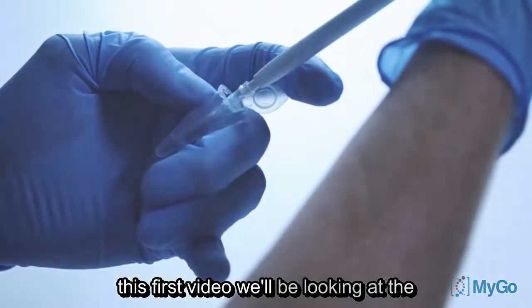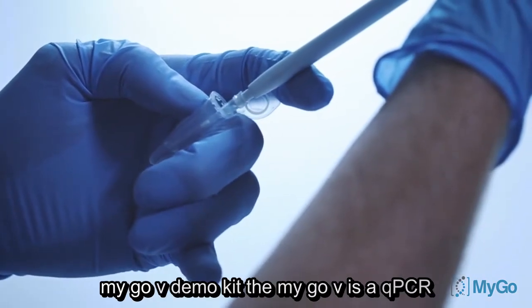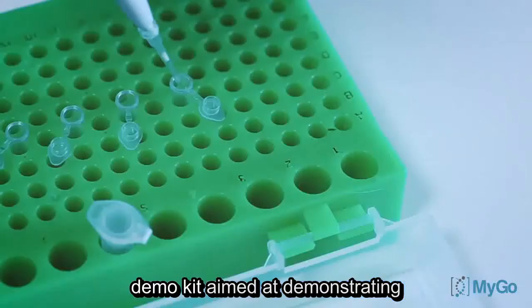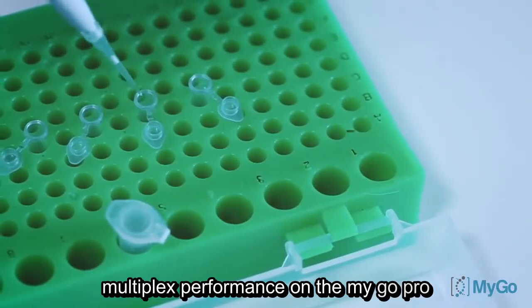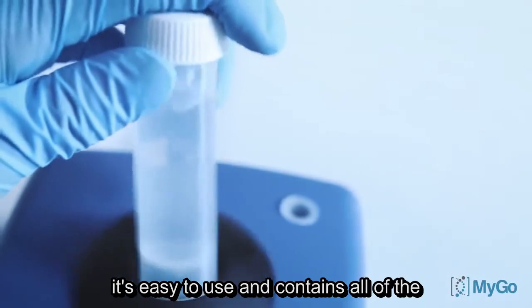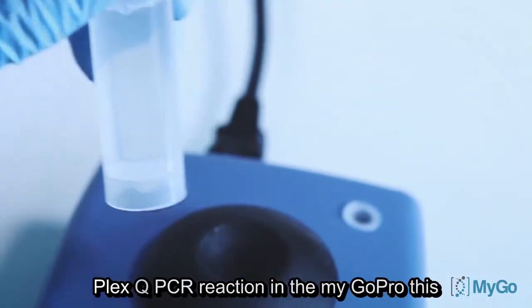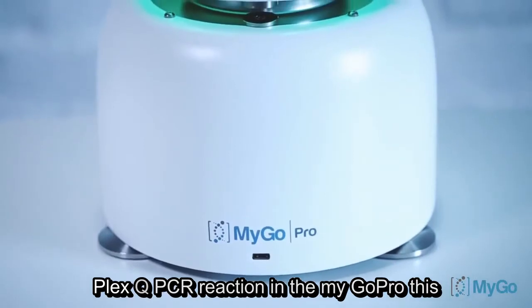In this first video we'll be looking at the MIGO5 demo kit. The MIGO5 is a QPCR demo kit aimed at demonstrating multiplex performance on the MIGO Pro. It's easy to use and contains all of the reagents you'll need to demonstrate a 5-plex QPCR reaction in the MIGO Pro.